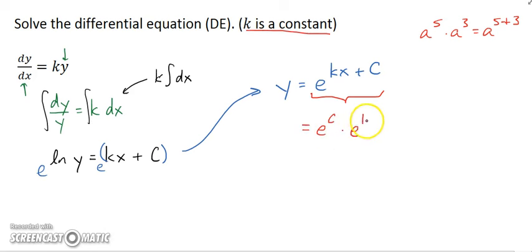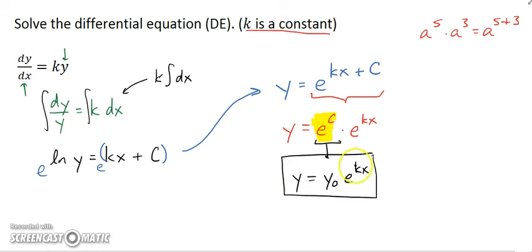Now the other thing here is that if c is a constant, well, so is e. So that makes e to the c some constant as well. So this is a constant also, and they gave this constant a special name. They call it y sub zero. And in a second, we'll talk about why that might be their choice. So here's your solution. We get y equals y sub zero, or some constant, e to the kx.